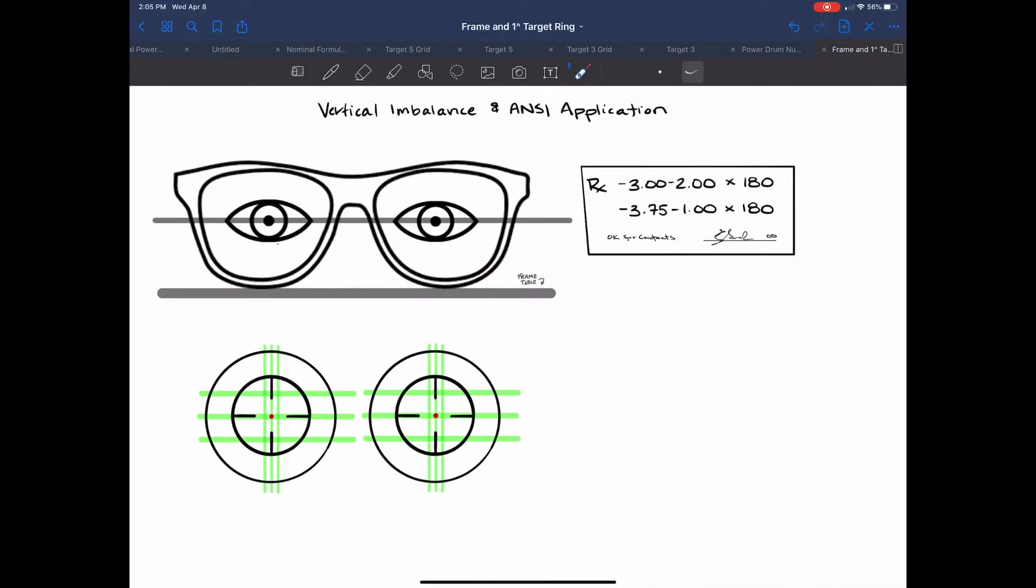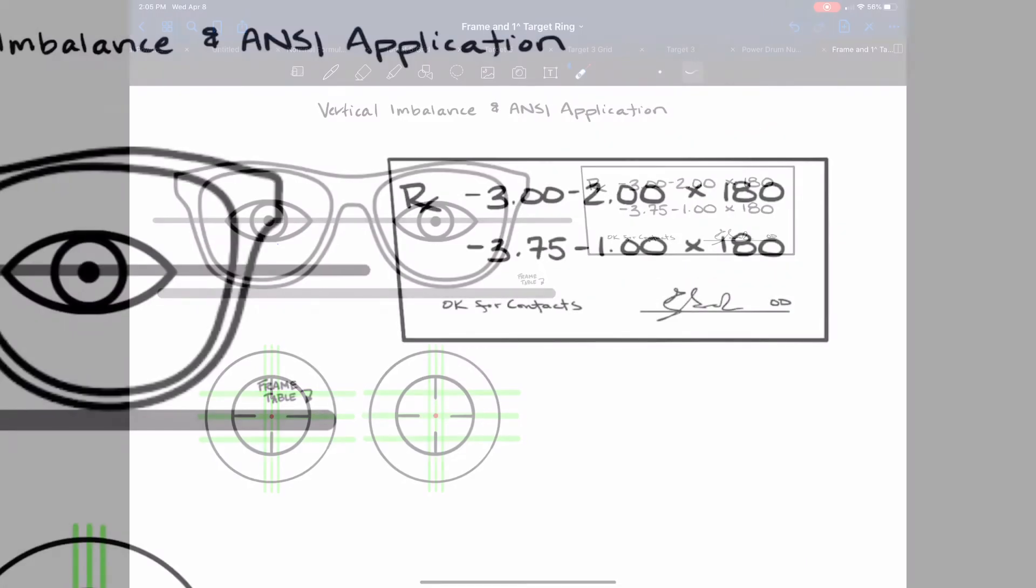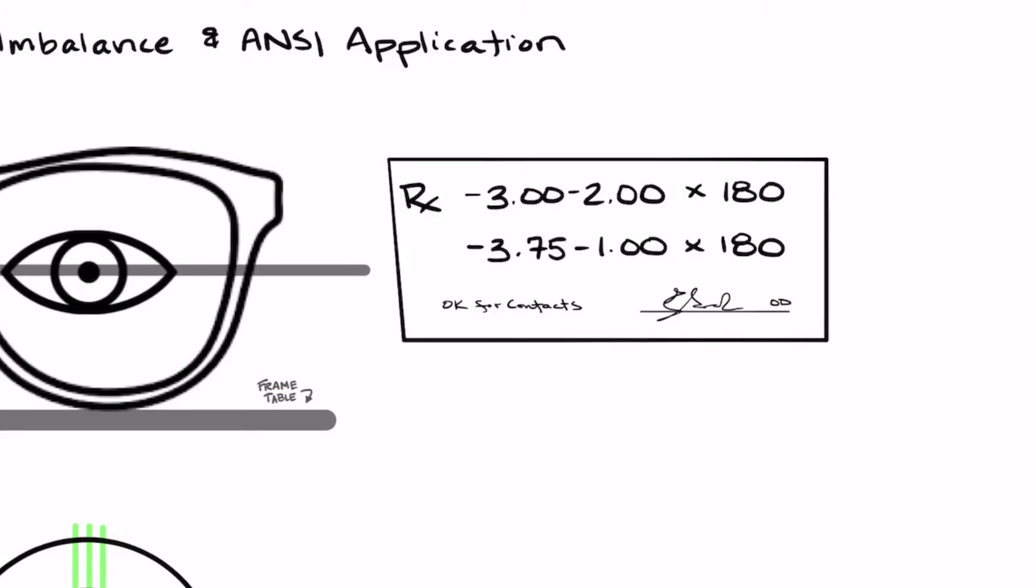So looking at this prescription right here we want to center the strongest lens in the 90th meridian. On a quick glance not really paying attention to much looking at these two spheres you might be inclined to think that this left eye is the stronger of the two lenses and go ahead and center it first but that would be incorrect because this prescription is actually at 180 so the amount is actually equal to both the sphere and the cylinder 90 degrees away at the 90th meridian.